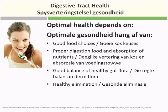For digestive tract health, you must choose good, healthy food with a variety of nutritious options. For proper digestion and absorption of nutrients, the body needs to make enzymes, so the right food choices are essential. You also need a good balance of healthy gut flora — in other words, you need probiotics. Viruses, bad bacteria, and fungi in your gut must be kept under control, and that's where probiotics help.